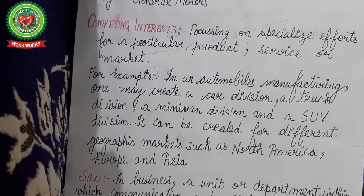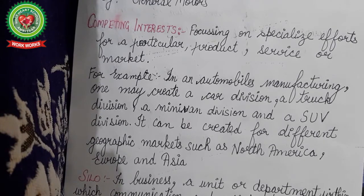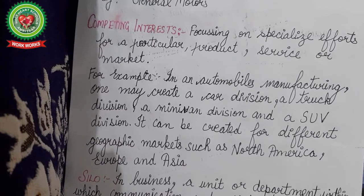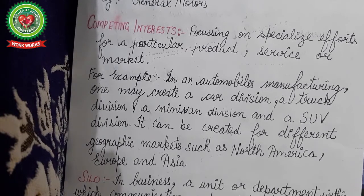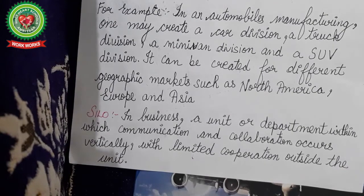For example, in an automobile manufacturing company one may create a car division, a truck division, a mini van division, and an SUV division. It can also be created for geographic markets such as North America, Europe, and Asia. What the company is doing here is addressing competing interests of customers.